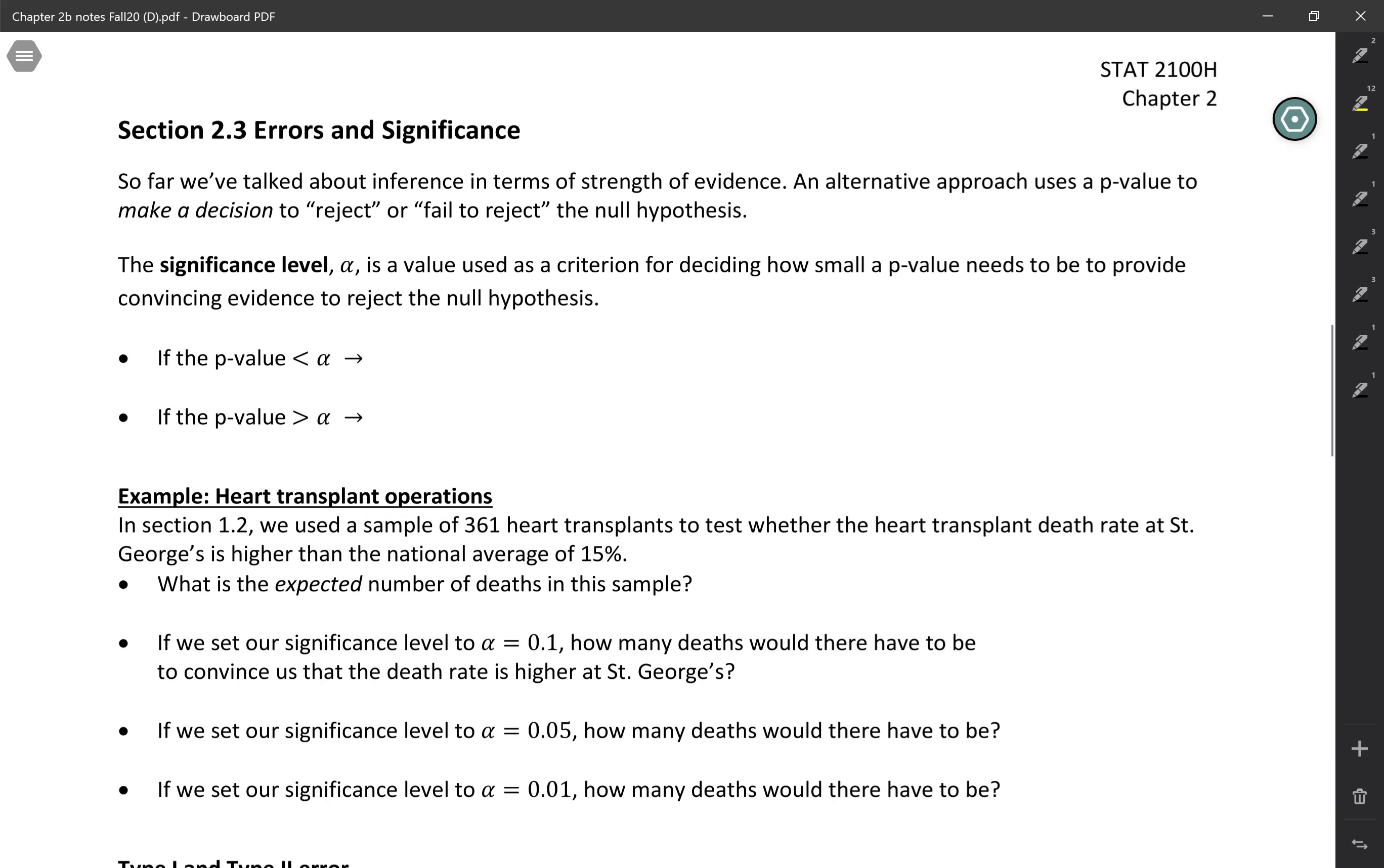So far we've talked about inference in terms of the strength of evidence, so the evidence that we have against the null and for the alternative. Another approach uses a p-value to make a decision, so either you reject or you fail to reject the null hypothesis, basically turning this into a binary decision.